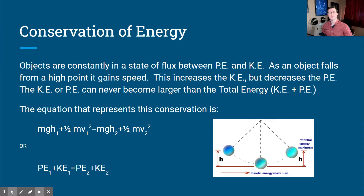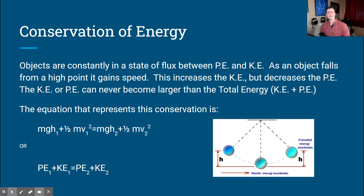So what is the conservation of energy? Objects are constantly in this state of flux between potential and kinetic energy. As an object falls from a high point, it gains speed — gains velocity — which increases its kinetic energy, because kinetic energy is based on the movement of objects. If an object has motion, it has some form of kinetic energy. But since it's falling and reducing its overall height, we are decreasing the potential energy. So as one is increasing, the other is decreasing.